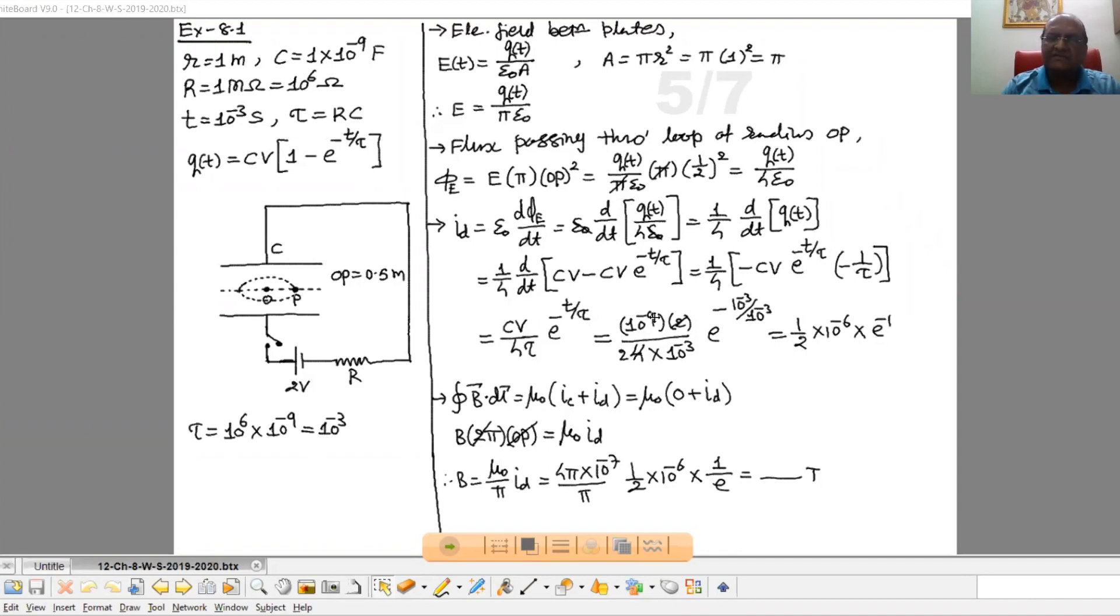C is 10 raise to minus 9. Battery is 2 volts. So 2. Then 4 tau is 10 raise to minus 3. Here we calculated it. Then E raise to, time that we have to take 10 raise to minus 3 second. Tau calculated 10 raise to minus 3. So finally you will get half into 10 raise to minus 6 into E raise to minus 1. This is your displacement current.